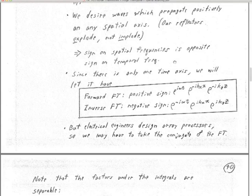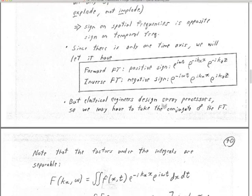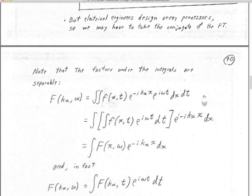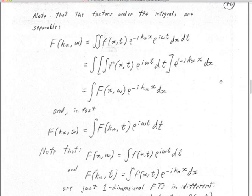For the sign convention: we're choosing the convention of physicists, which is opposite to that of electrical engineers. Electrical engineers have the same sign for the spatial transform and time transform because they're worried about waves collapsing onto antennas. We're worried about waves coming out from explosions. Our waves propagate positively on any spatial axis as time increases — reflectors explode — so we require the sign on the spatial frequencies to be opposite to the sign on the temporal frequency.